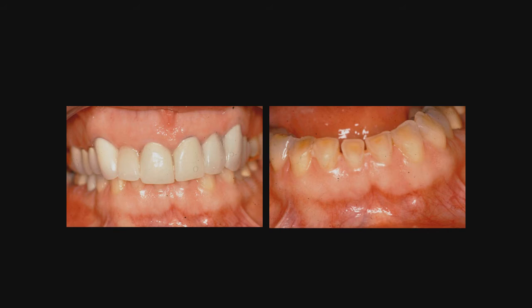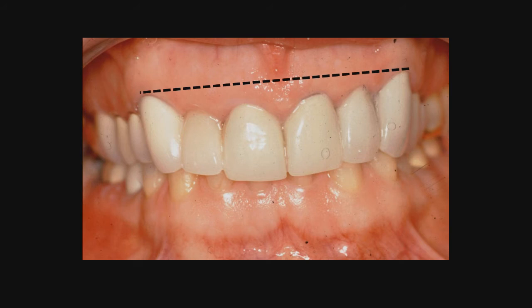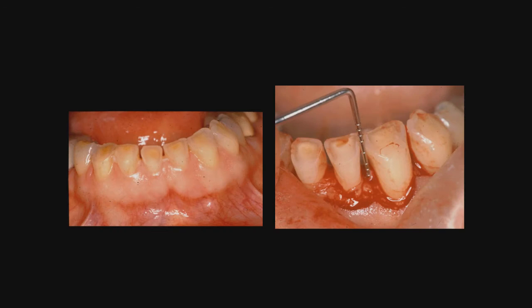On the left we see the pre-op view, and on the right we see the severe wear on the facial of the lower anteriors, which is a classic finding in the anterior dysfunction. The canines and central incisors should be at the same level. Interestingly, both the canine and central incisors are 11 millimeters long, and later you will see that these crowns should have been at least 3 millimeters shorter.